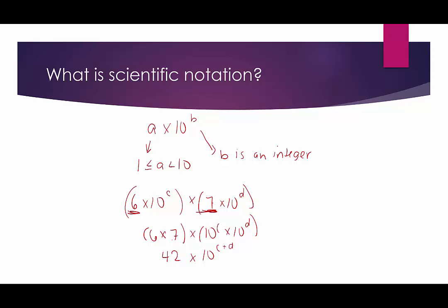So we have 42, which is too big — this number is not in scientific notation, so this is not the final answer. We need to play a balancing act with the two factors. If I do something to one factor, I have to do the opposite thing to the other factor. So if I have 42, I need to make it smaller. If I need to make it smaller, that means I need to take the other factor and make it bigger. So I would move the decimal — dividing this factor by 10 — which means I need to multiply the other factor by 10, giving me an extra factor of 10.